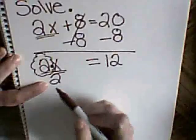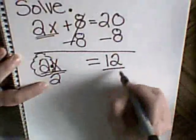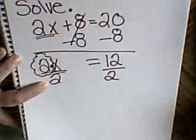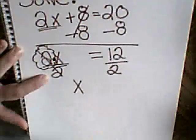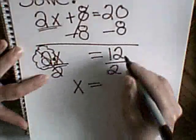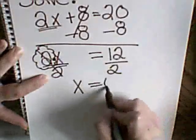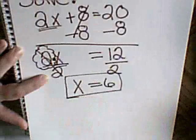But remember, whatever I do to one side, I have to do to the other side. 2 divided by 2 is 1, which leaves me an x. And 12 divided by 2 is 6. So I get x to equal 6.